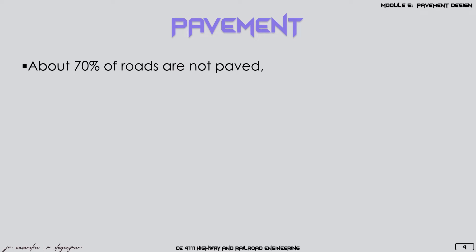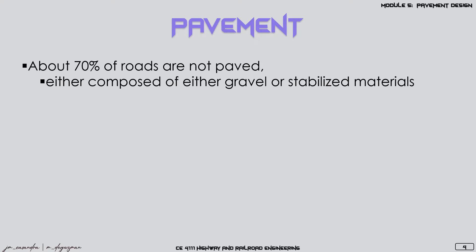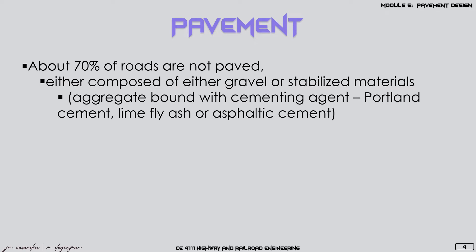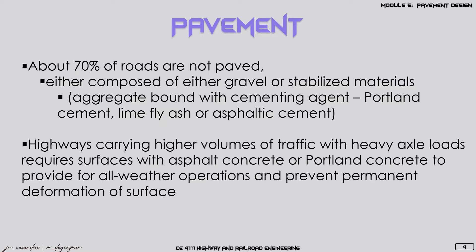From our overview of the Philippine road network, about 70% of roads are not paved. Unpaved roads are basically composed of gravel, soil, or stabilized materials such as aggregates with cementing agents like Portland cement, lime fly ash, or asphalt cement. Highways that carry high volumes of traffic with heavy axle loads such as trucks or trailer trucks require surfaces covered with either asphalt concrete or Portland cement concrete, to provide all-weather operations and prevent permanent deformation on the surface.